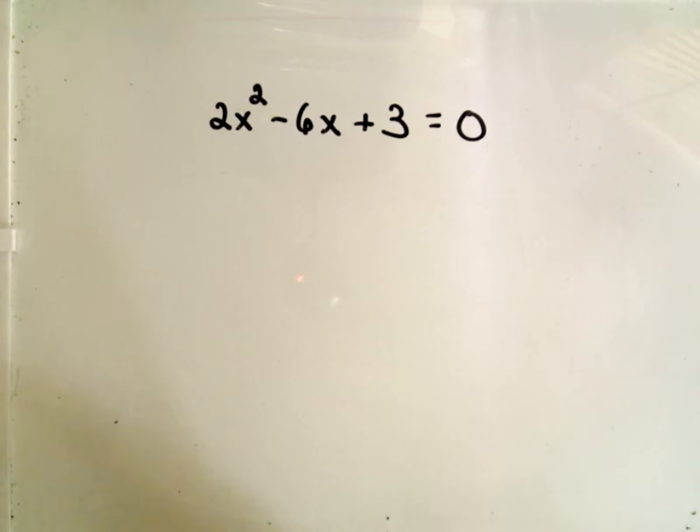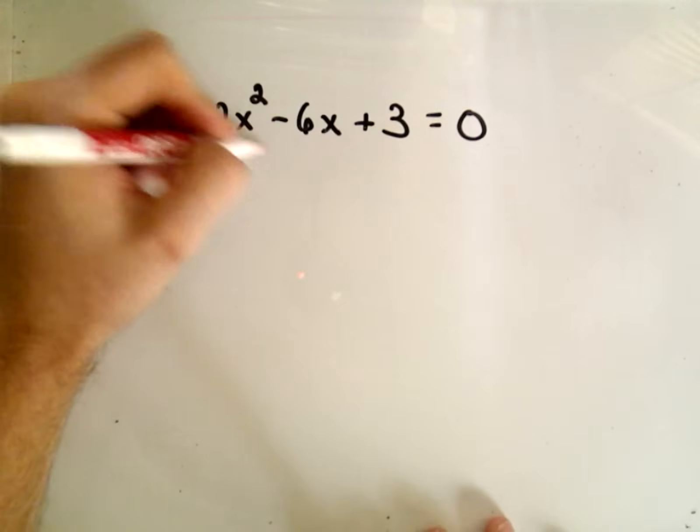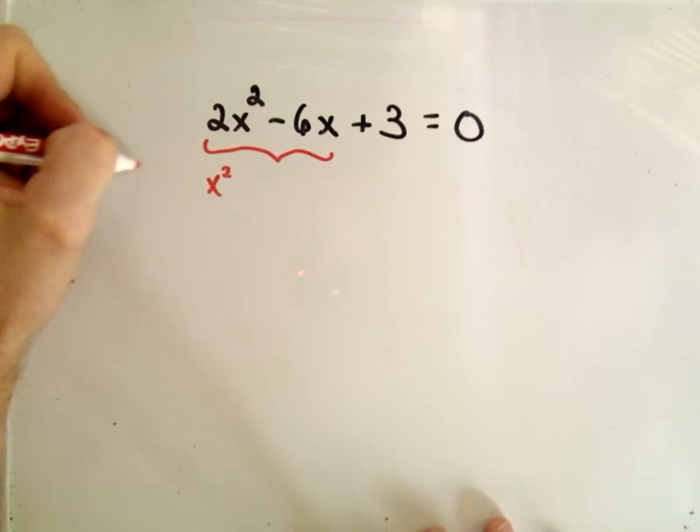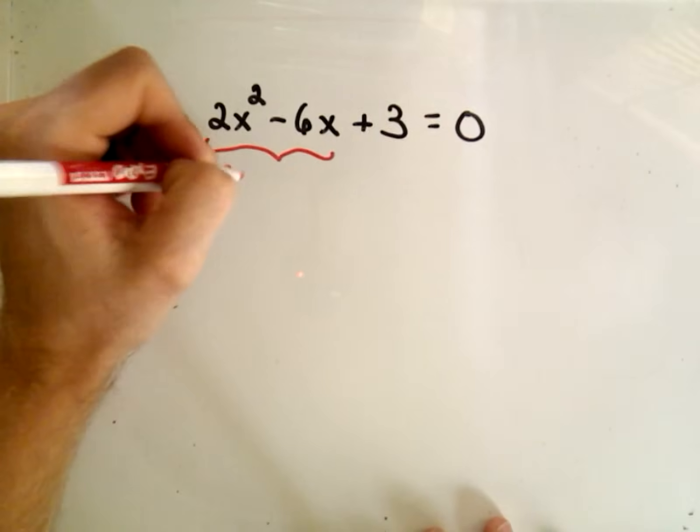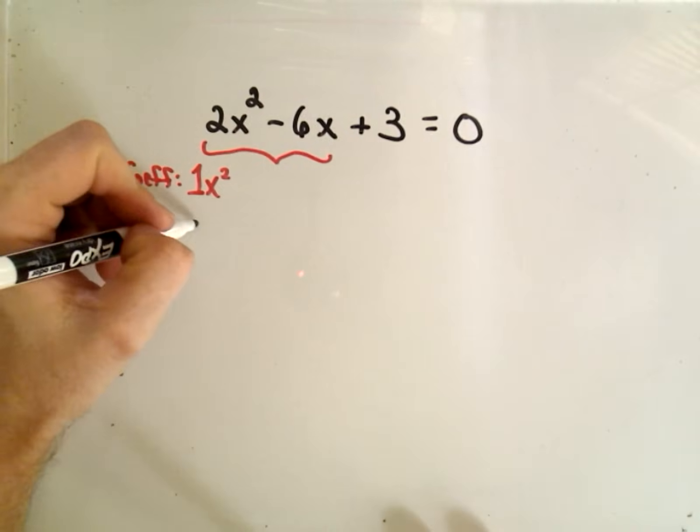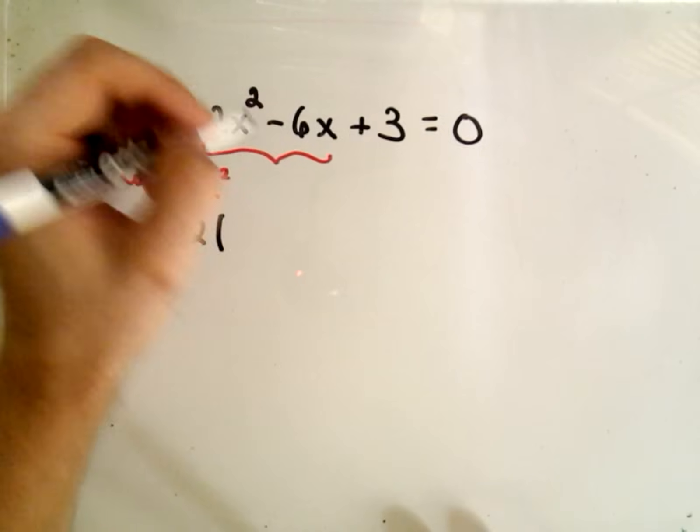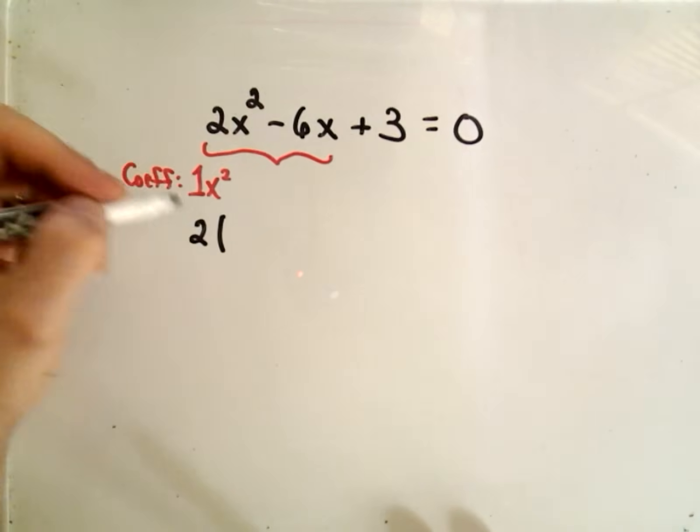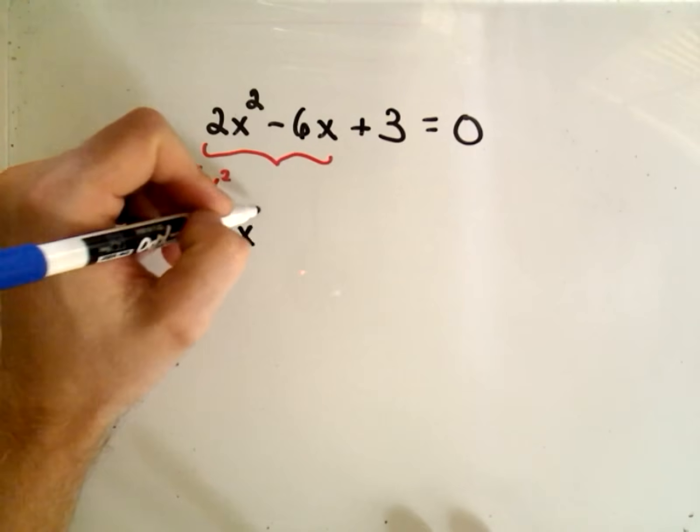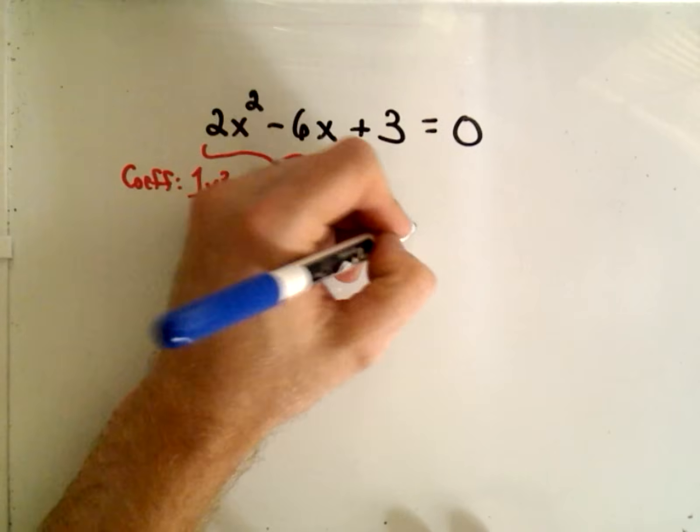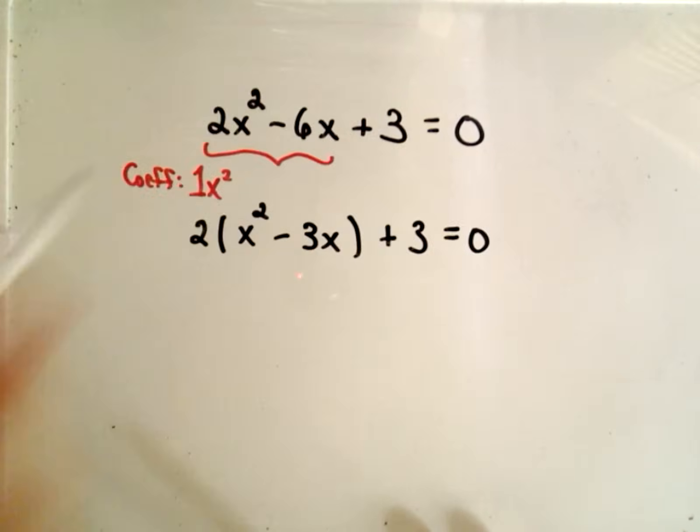So the idea, again, just like in the first video, is you want the coefficient on the x squared to be a 1. Well, to do that, we have to factor a 2 out. And I'm only playing with the x terms here. So if I factor a 2 out, I would need x squared minus 3x left over, so plus 3 equals 0.